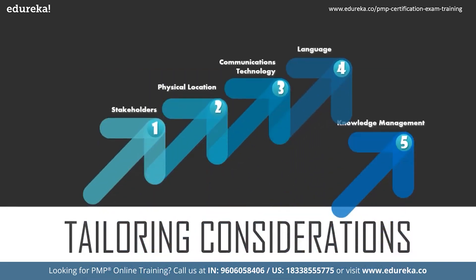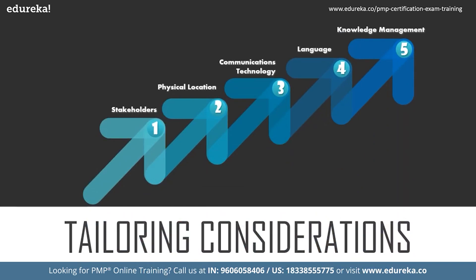While communicating and looking at those communication needs, one must ensure the communication happens as needed by the stakeholders. Stakeholders need to be identified. In the overall framework — 10 knowledge areas, 5 process groups, and 49 processes — the initiating process group has only two processes: one in integration management and one in stakeholder management. The project manager's first job after being assigned is to identify stakeholders. Identification of stakeholders is not a one-time job; it must happen throughout the project lifecycle, and their communication requirements must be understood.